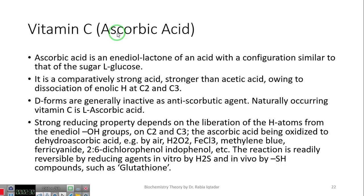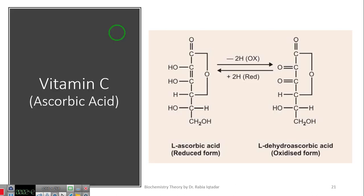Next structure, we will note that it is a comparatively strong acid, stronger than acetic acid, owing to dissociation of enolic hydrogen at carbon-2 and carbon-3. Which one is enolic hydrogen? You have carbon number 2 and carbon number 3. This hydroxyl group can dissociate its hydrogen. When we dissolve it in the water, this hydrogen can be released. And due to this, it gives its acidic character.